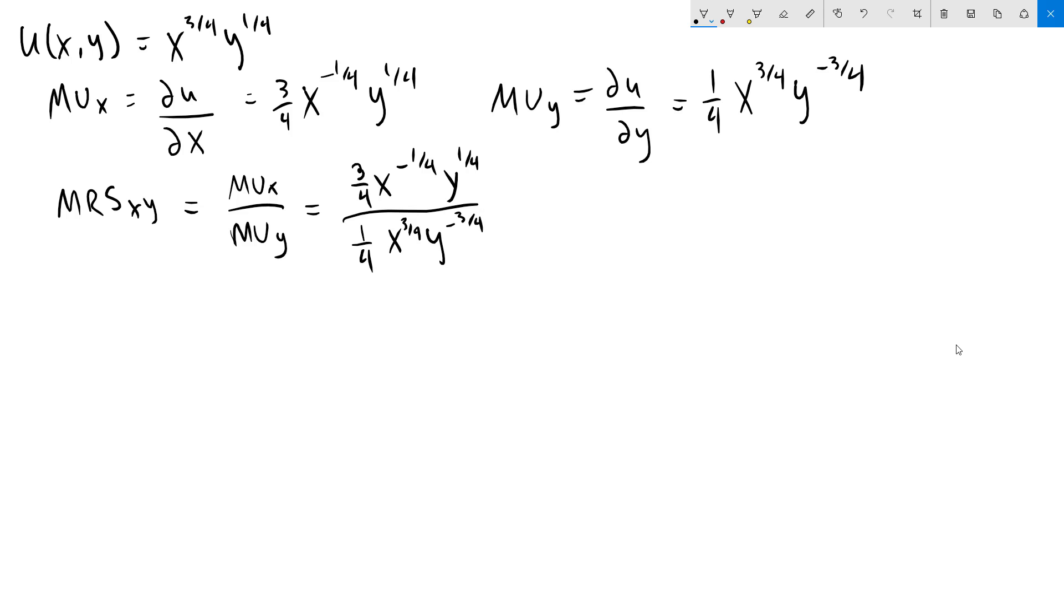To simplify this down a bit, we can first recognize that whenever we have a negative exponent, we can move that term to the other side of the fraction and then flip the sign of our exponent. This means our x to the negative one-fourth is going to come down to the bottom and our y to the negative three-fourths is going to come up to the top.